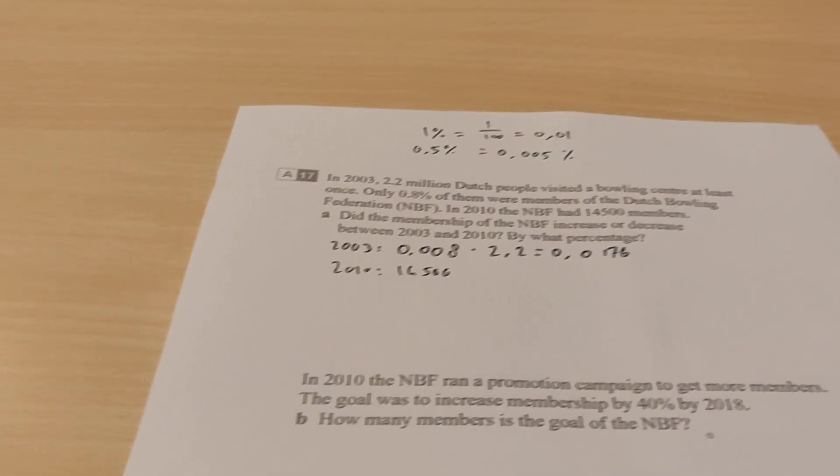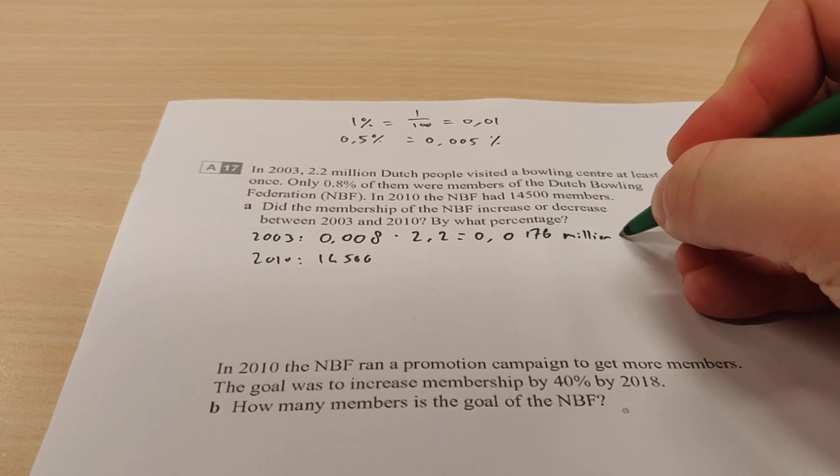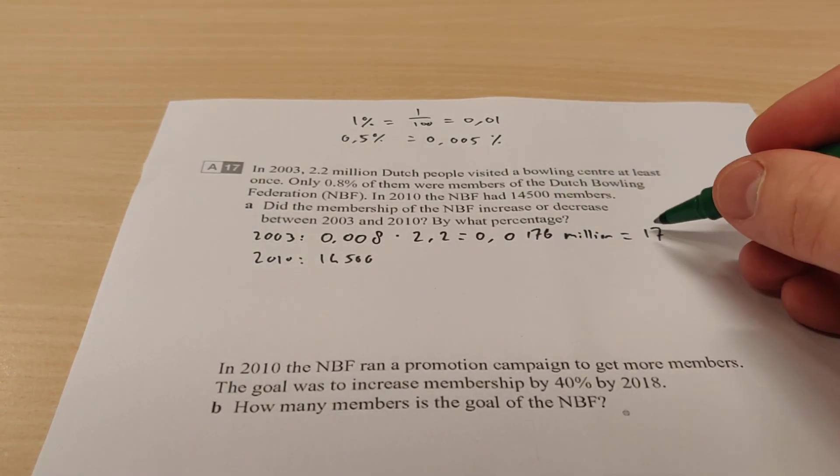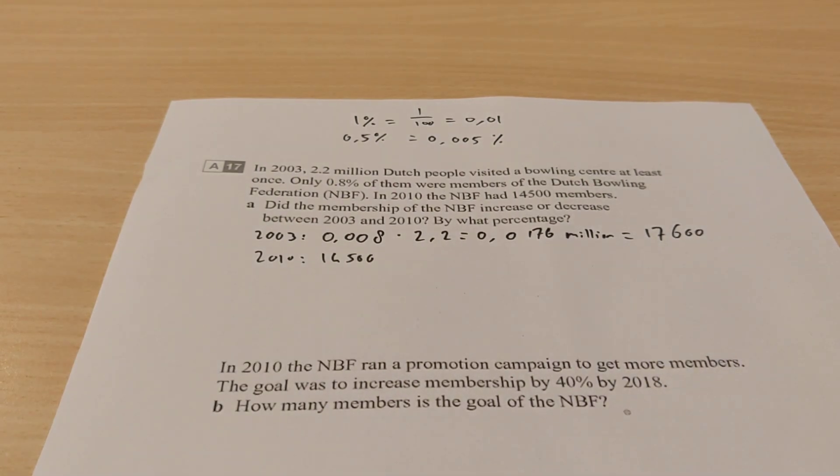Now this is in millions, but I want to say how much it is in thousands. So this is in million. If I move the point three places, I get 17,600 people. So you can see that the number of members went down. See that? It went from this number to that number, so it was a decrease.